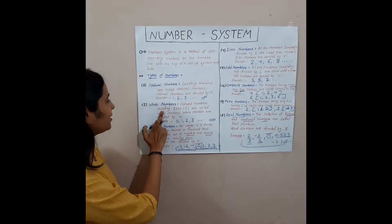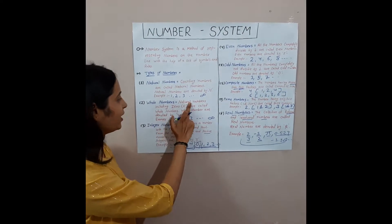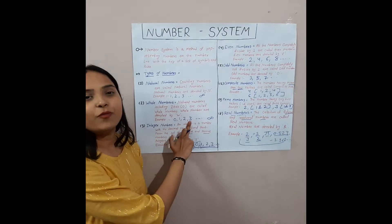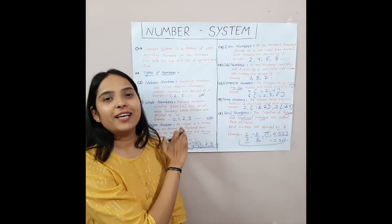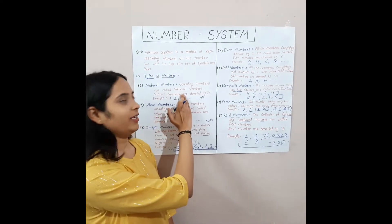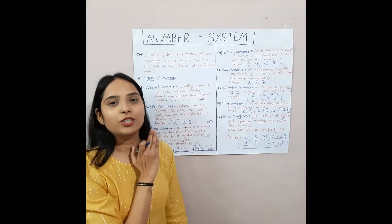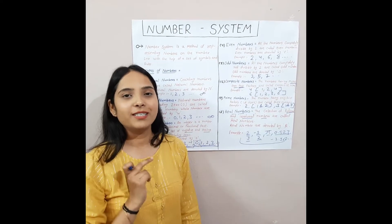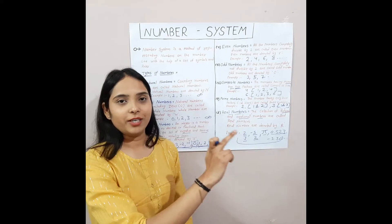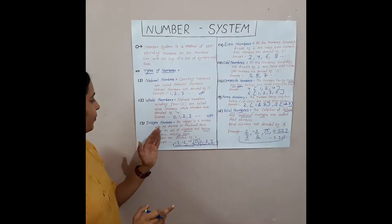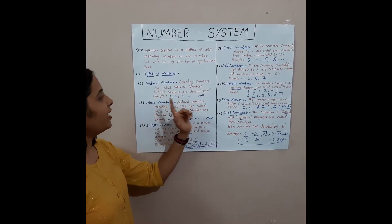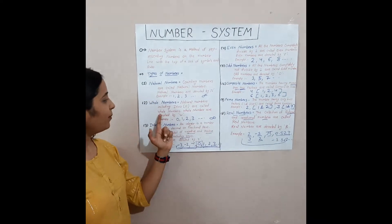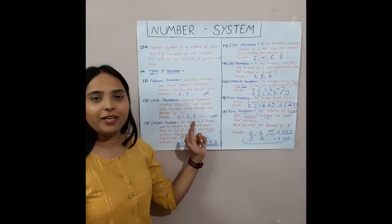The next number is the whole number. Natural numbers including 0 are called whole numbers. We can say that whole numbers are a subset of natural numbers, because natural numbers start from 1 to infinity but whole numbers start from 0 to infinity. Natural numbers are represented by capital N and whole numbers are represented by capital W.